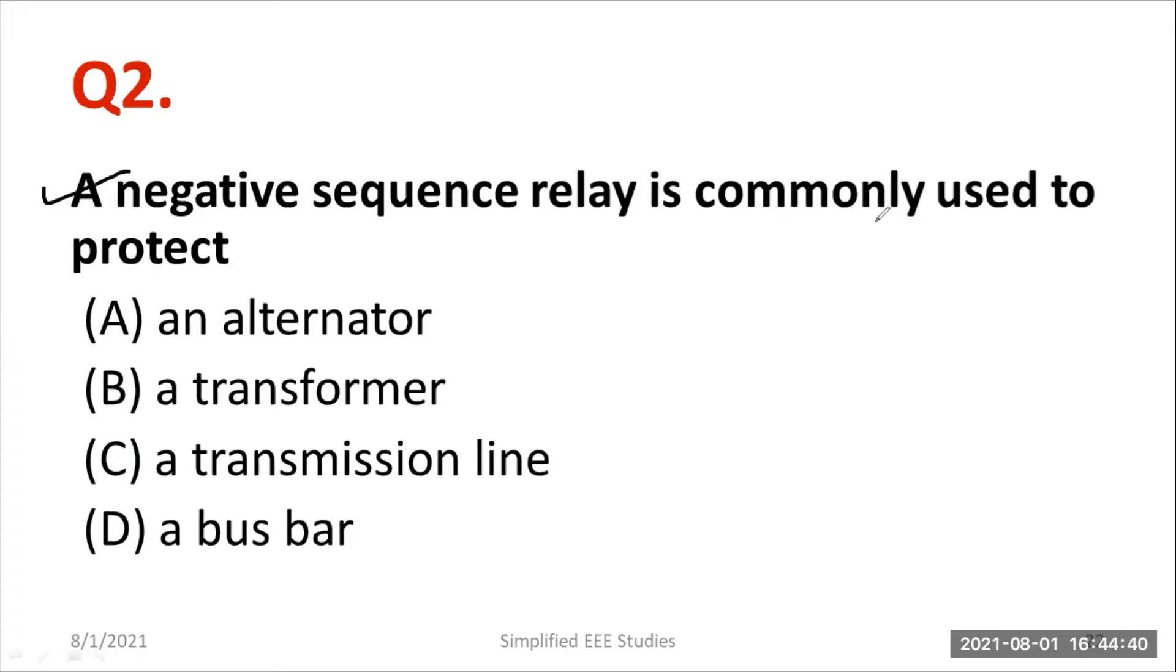A negative sequence relay is commonly used to protect an alternator, transformer, transmission line, or bus bar. Actually, the negative sequence relay is most used for the alternator or you can call AC generator. For transformer, Buchholz relay is actually most suitable. So let us continue the discussion.